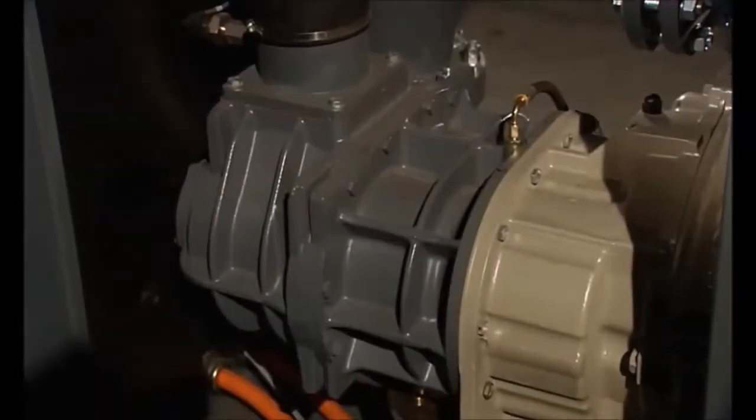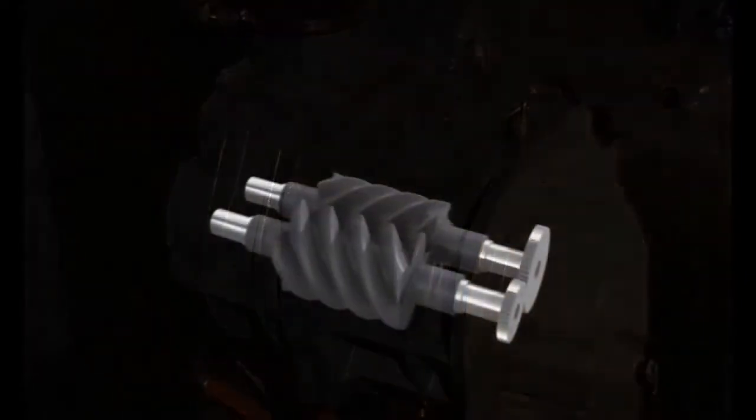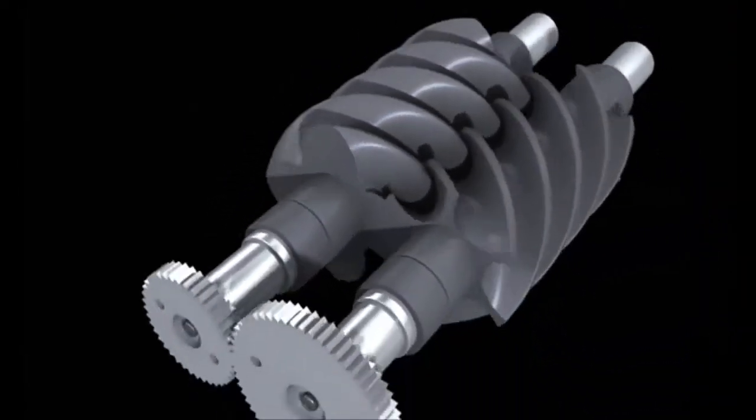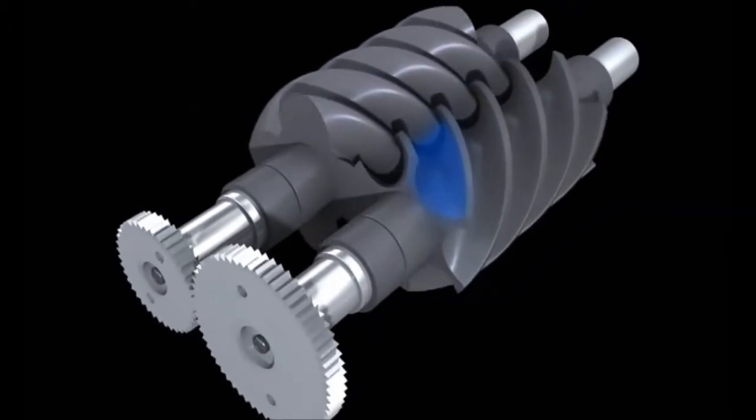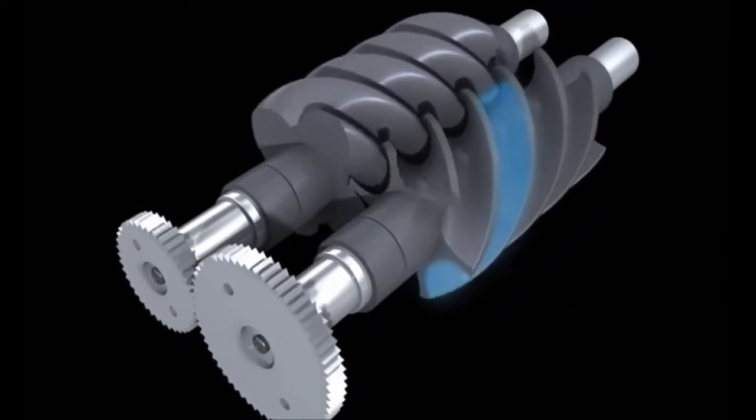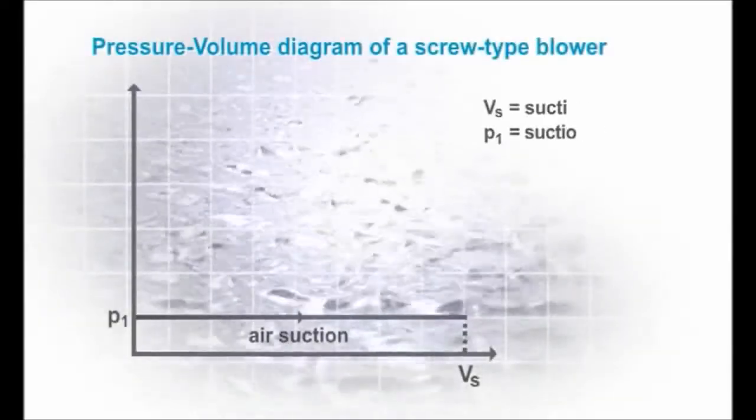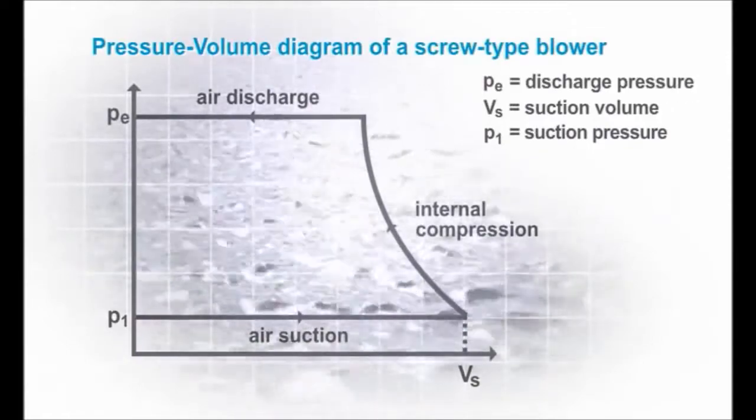In the screw type blower, air fills the space between the male and female rotors. As the rotors move towards each other, the air volume decreases. Finally, the compressed air leaves through the outlet port. Due to this internal compression, the discharge volume is smaller than the suction volume, and less energy is needed to supply the compressed air to the aeration tank.